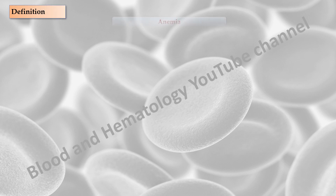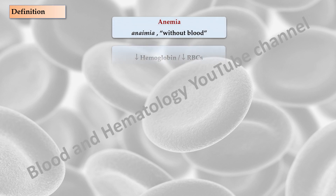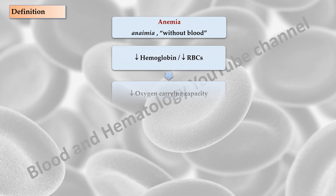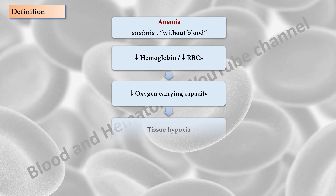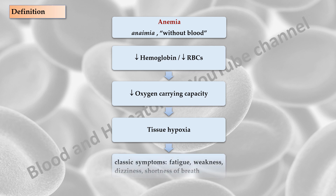The term anemia is derived from the Greek word meaning without blood. Anemia is defined as a decrease in hemoglobin concentration or number of erythrocytes below the reference interval for healthy individuals of similar age, sex and race under similar environmental conditions. This gives rise to decreased oxygen carrying capacity of the blood, tissue hypoxia, and the classic symptoms such as fatigue, weakness, dizziness and shortness of breath.